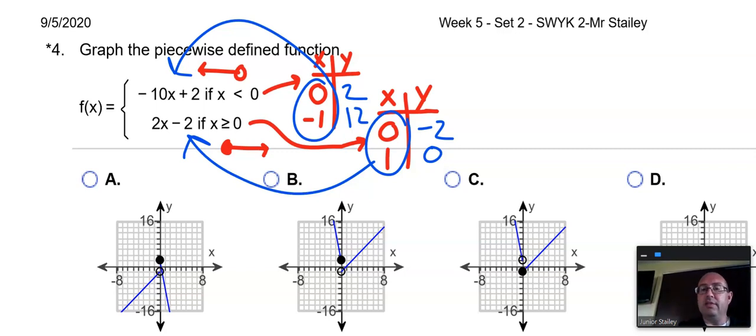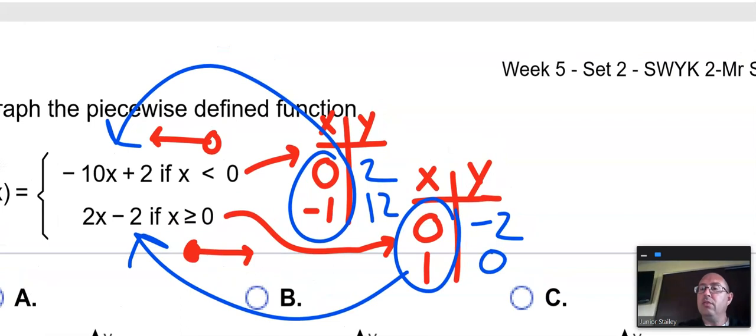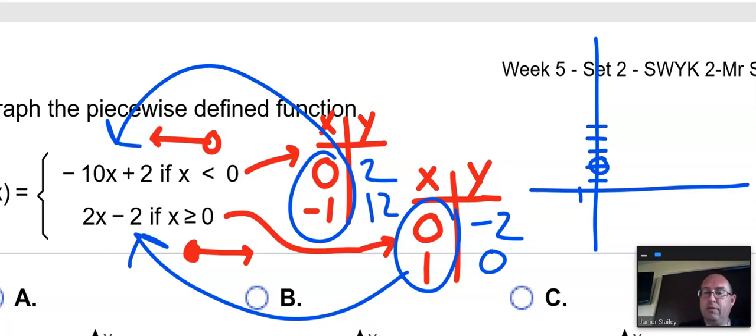Okay. So let's see what kind of picture that's going to create. 0, 2 is my open circle. And negative 1, 12. Whoa. So, 3, 4, 5, 6, 7, 8, 9, 10, 11, 12. It's got to go through that point right there.